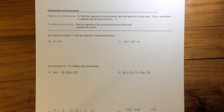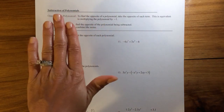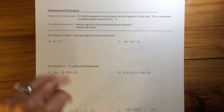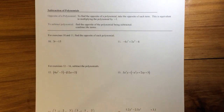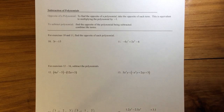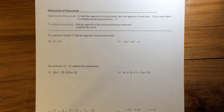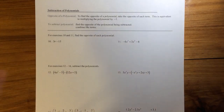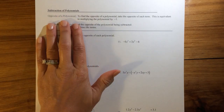Subtraction of polynomials. Subtraction of polynomials is very similar to the addition of polynomials, except now you're introducing a negative — you're changing the sign. You're subtracting. So, here we go.